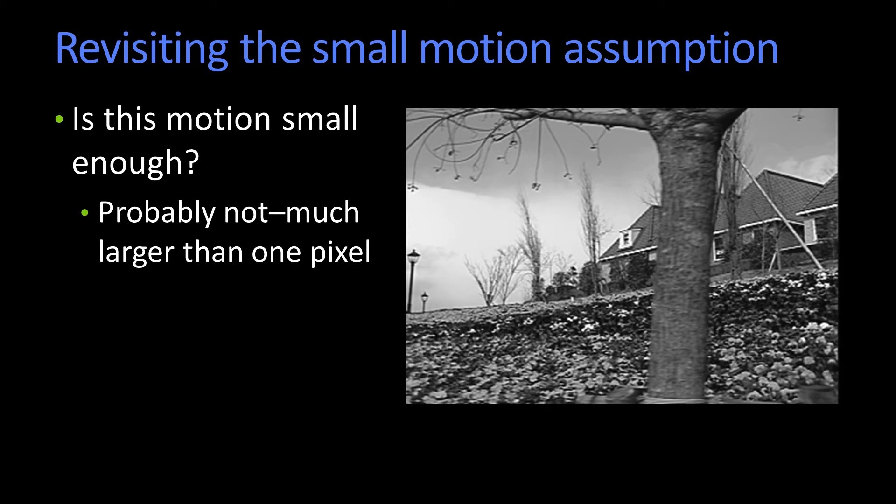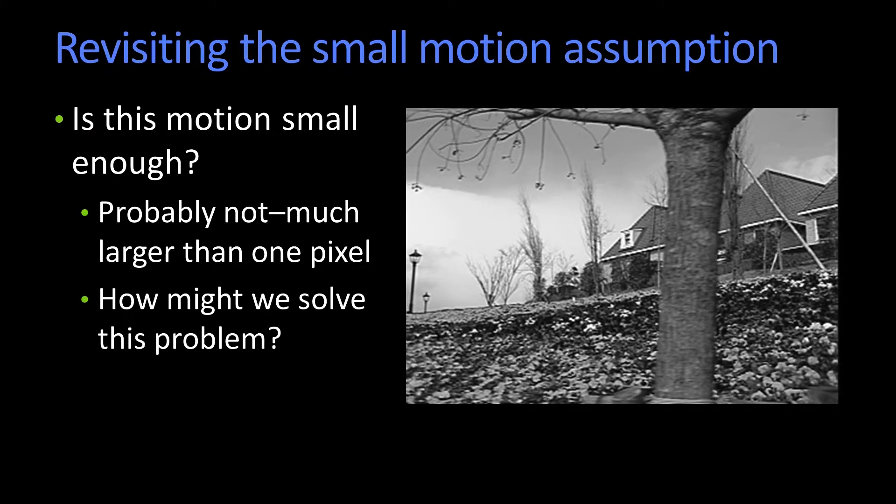Do you think this is a small enough motion to be able to run Lucas-Kanade? No. Look, there's a lot more than one pixel or a small number of pixel motion. I'm uncovering entire trees in the background. So the problem is, how could we solve this? How could we eliminate this problem of large pixel motion?